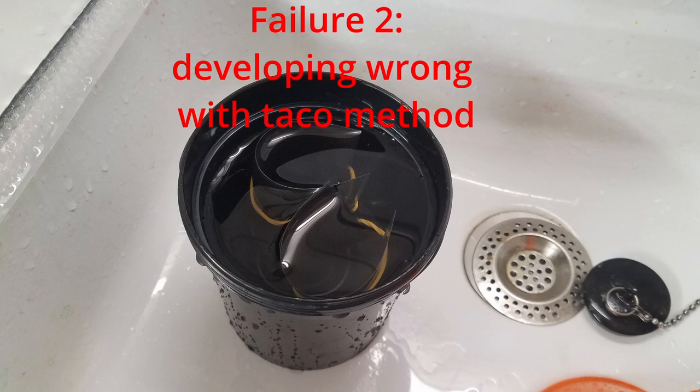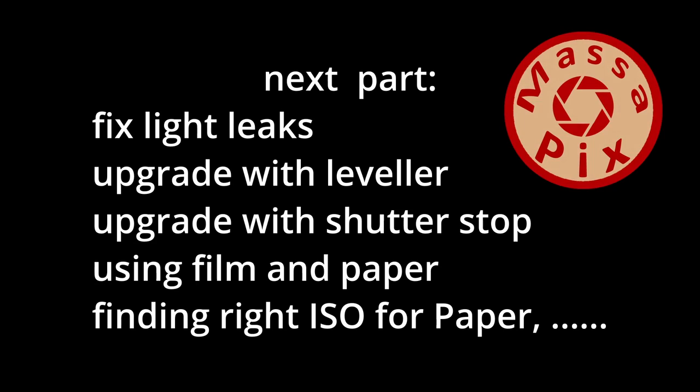And for sure there are some other things: fix light leaks, upgrade with the leveler, upgrade the shutter stop, using film and paper, and finding the right ISO for the paper, which is interesting for me as I would like to shoot more with paper. So stay tuned, try to catch the next part which will come soon.